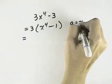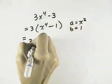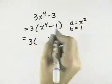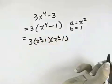So we need the square root of the first term, which would be x squared, and the square root of the second term, which is 1. So that 3 is our first factor, but we can break the second factor down into the sum and difference of the square roots, which would be x squared plus 1 times x squared minus 1.